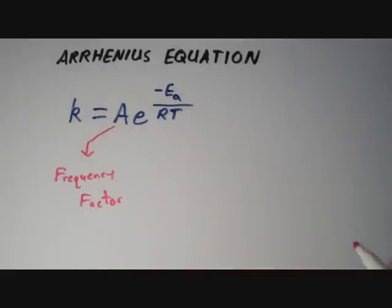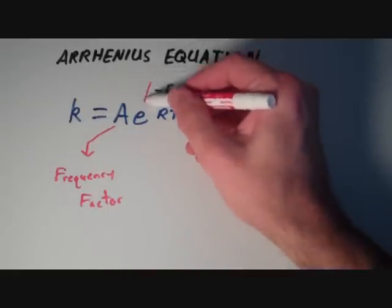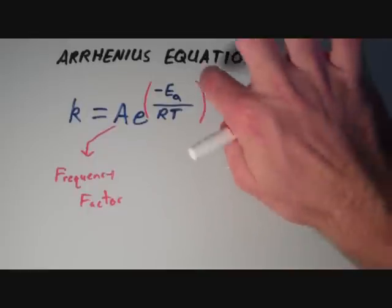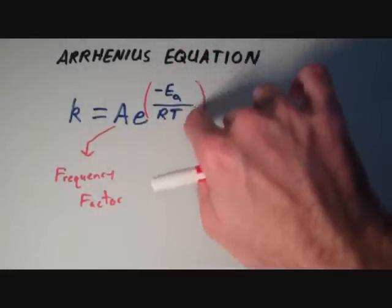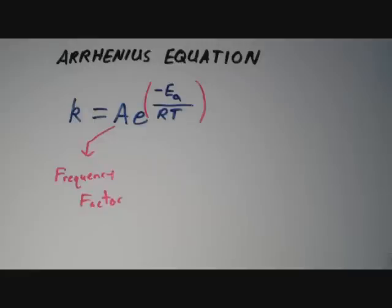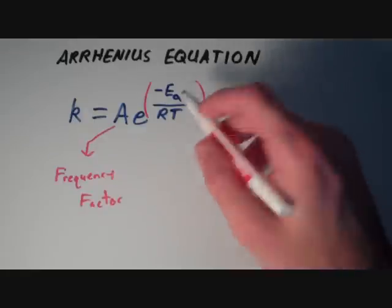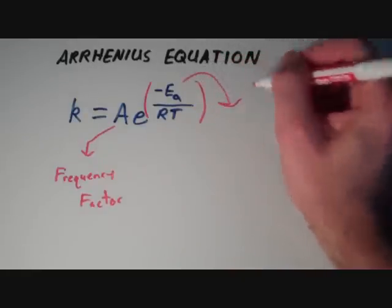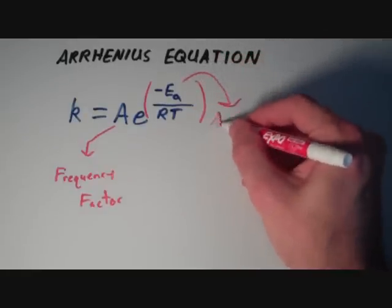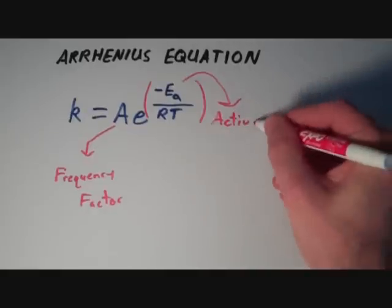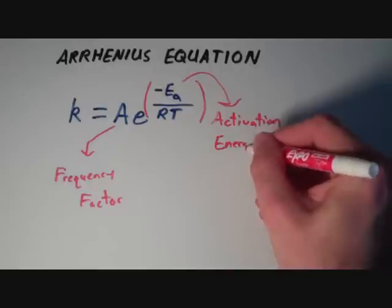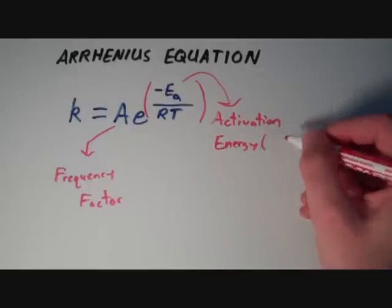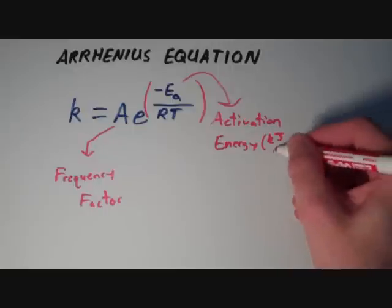Lowercase e, that's just a mathematical constant. And keep in mind, we are raising this whole thing, this whole division problem here, we're raising e to the power of this whole thing. E sub A is what we call the activation energy, and that's typically presented in kilojoules per mole.